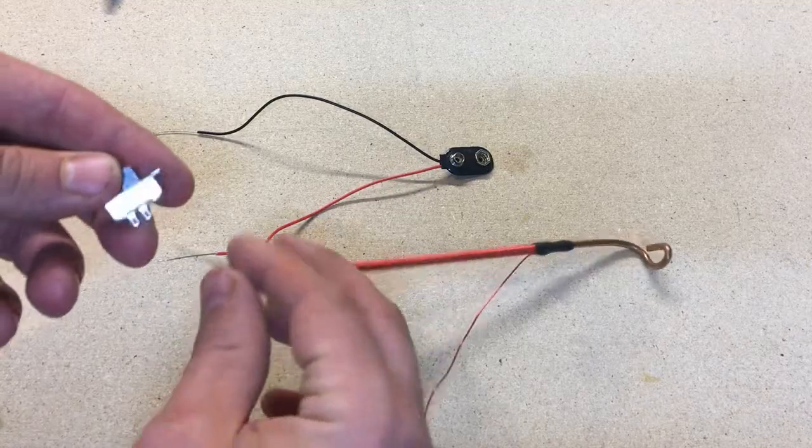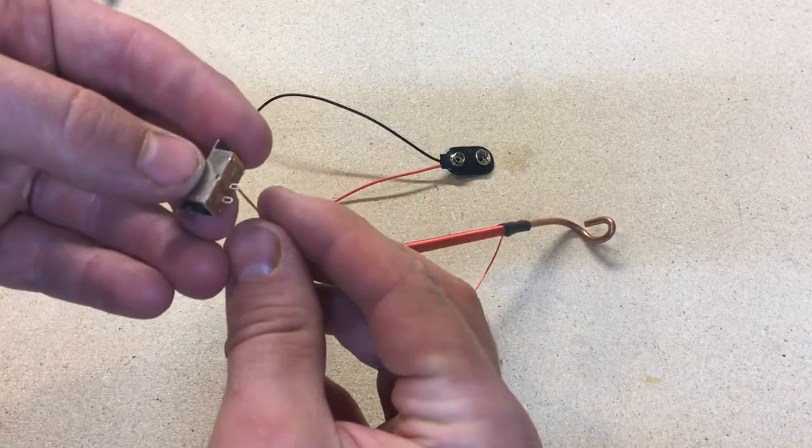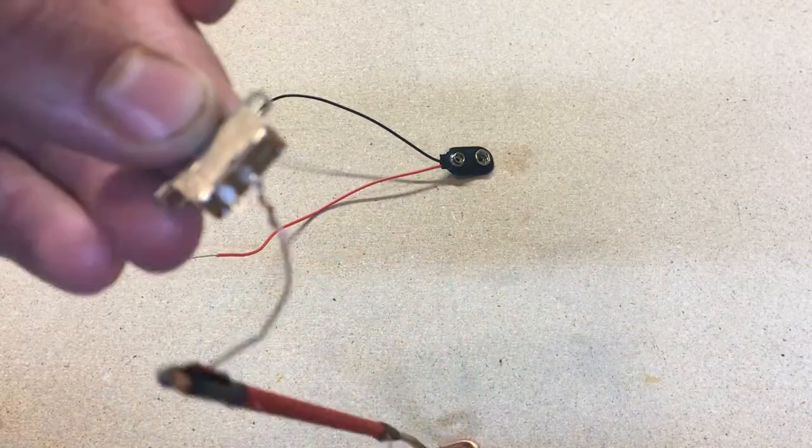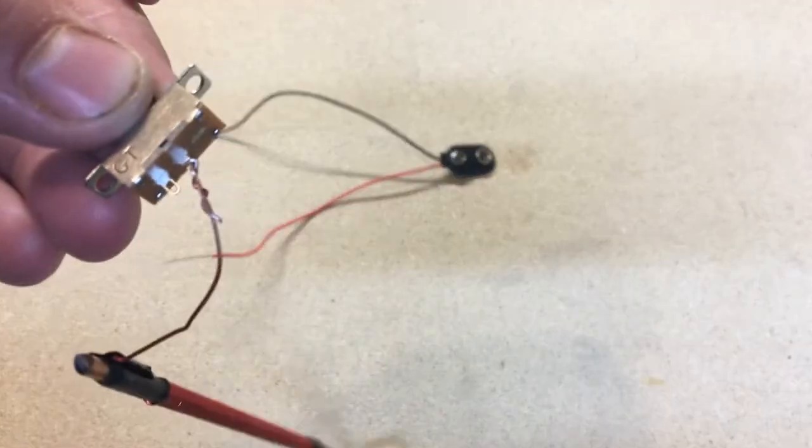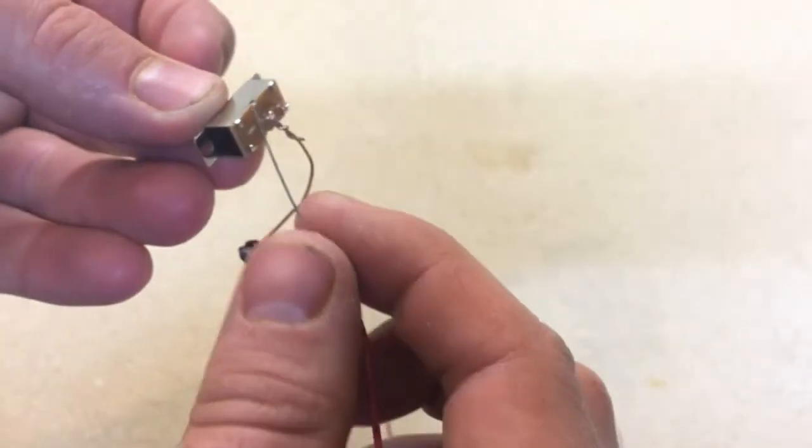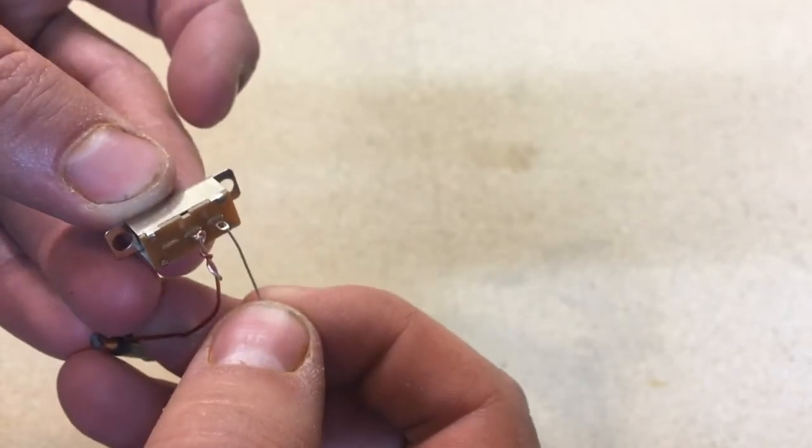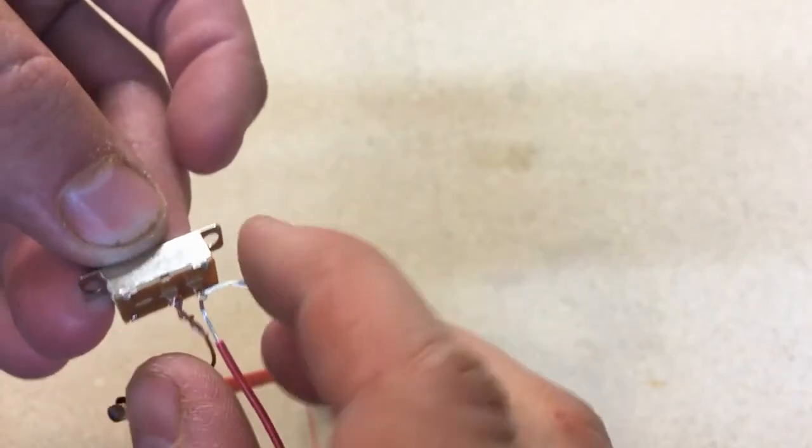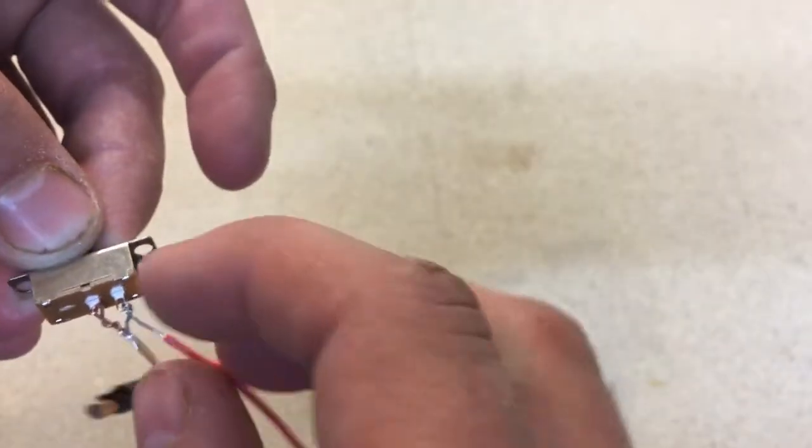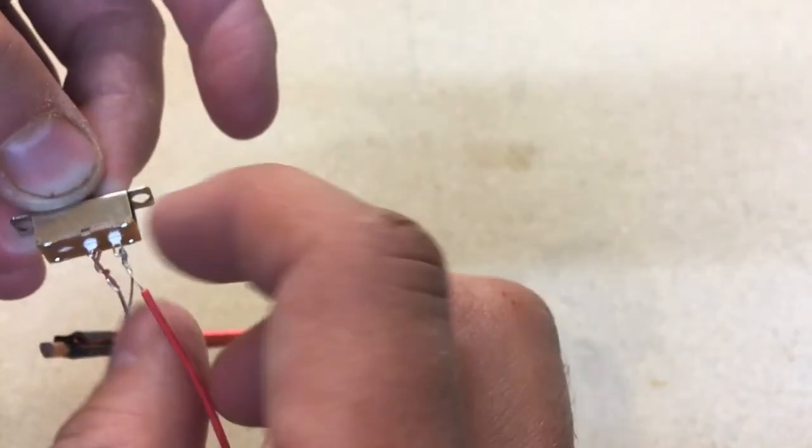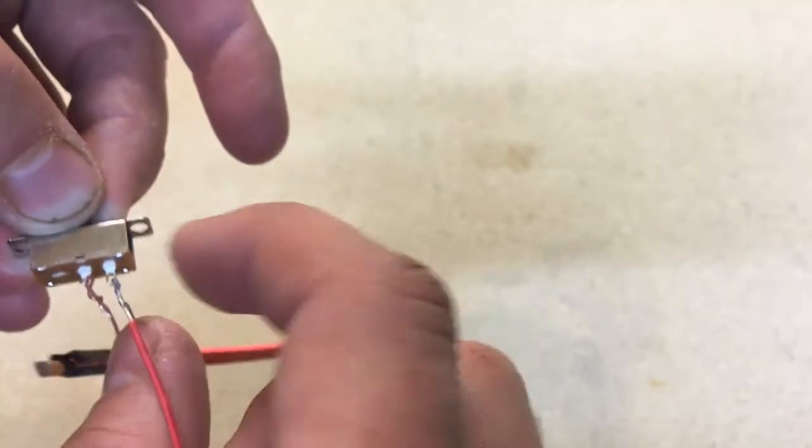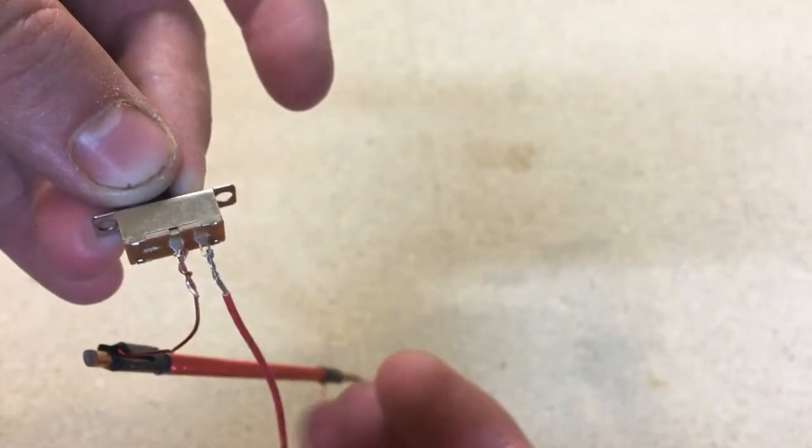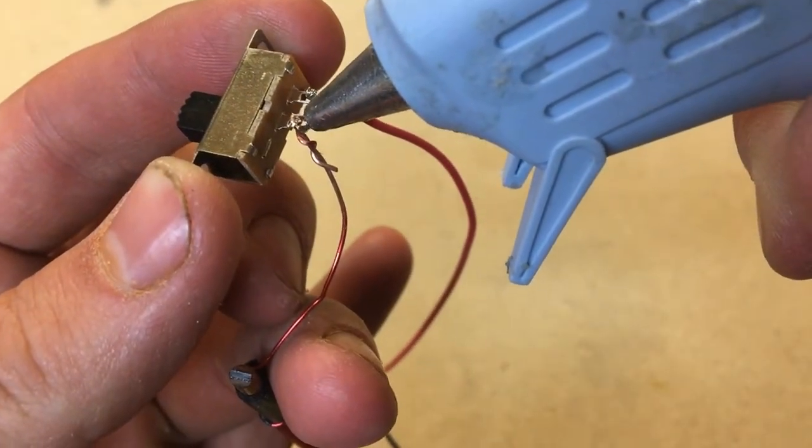One end of the electromagnet should be connected to one of the loops on the switch. One end of the battery clip should be connected to the other loop. You need to be sure that these wires make a strong connection with the loops of the switch, but don't touch each other. If they touch each other, they will create a short circuit, and you will not be able to turn off your electromagnet. A drop of hot glue can help keep the wires from touching once you've got them connected well.